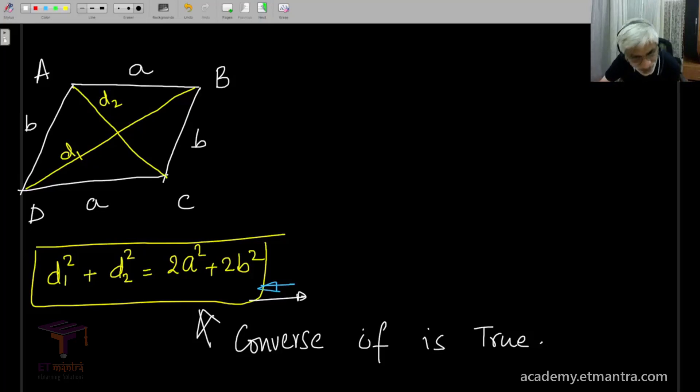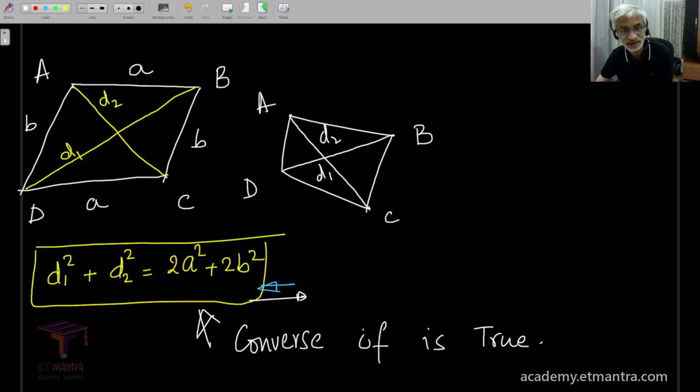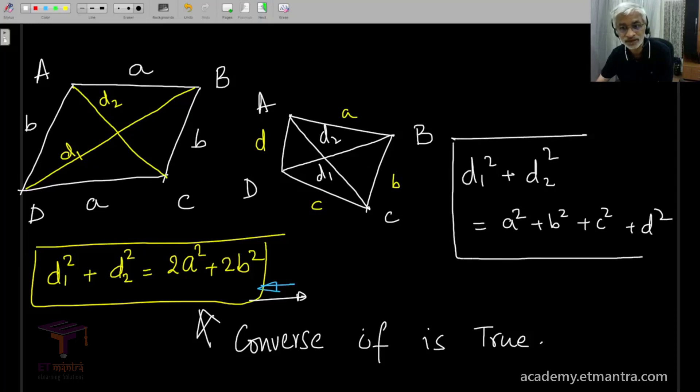So right now we will just state the theorem and it goes like this. If you take a quadrilateral and if it turns out that the diagonals d₁ and d₂ are such that d₁² - now let's label the sides of the quadrilateral as A, B, C, D - so if it happens that the diagonals satisfy the condition that d₁² + d₂² is equal to A² + B² + C² + D²,